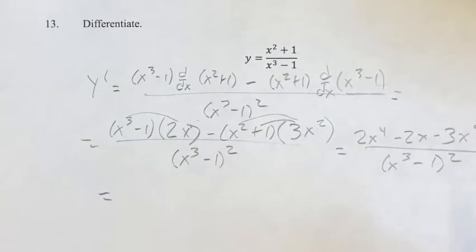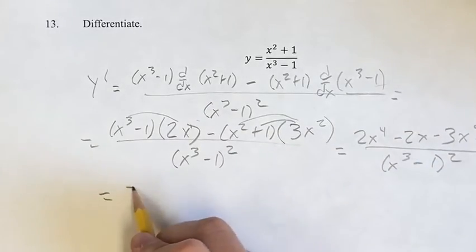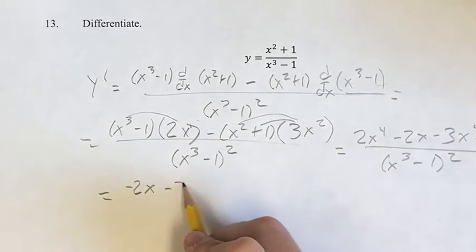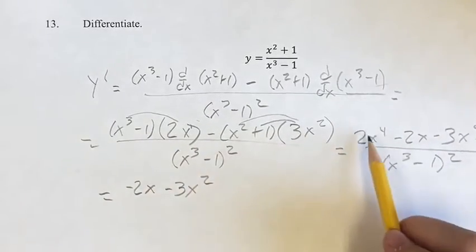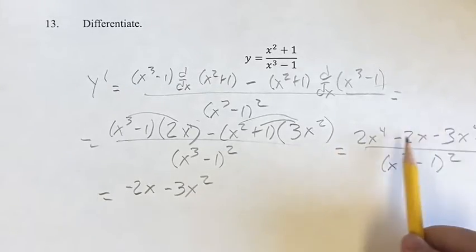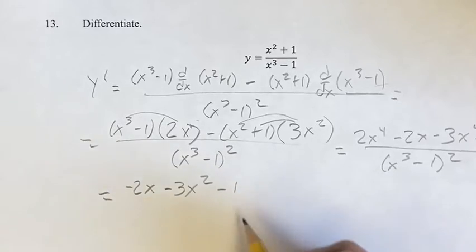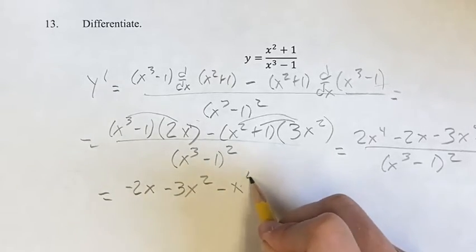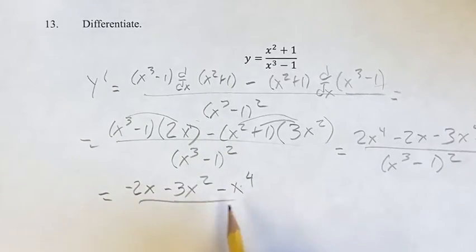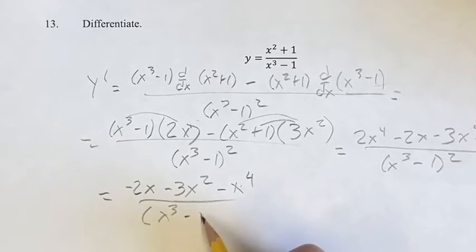Now, this is equal to minus 2x minus 3x squared plus 2x to the fourth minus 3x to the fourth, combining like terms. It's going to be 2 minus 3 is negative 1x to the fourth, which we can just write as negative x to the fourth. And this is all over x cubed minus 1 squared. This is your derivative.